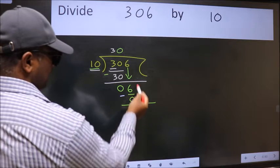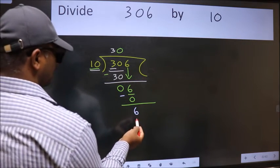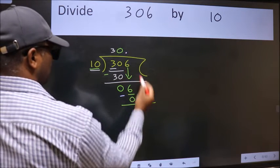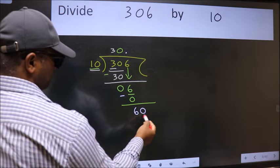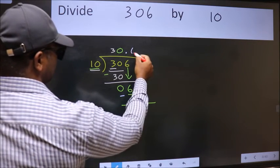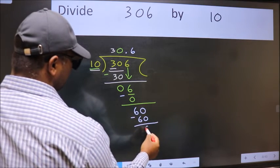Over here we did not bring any number down, and 6 is smaller than 10. So now we can put dot and take 0. So 60. When do we get 60 in 10 table? 10 times 6 is 60. Now we subtract. We get 0.